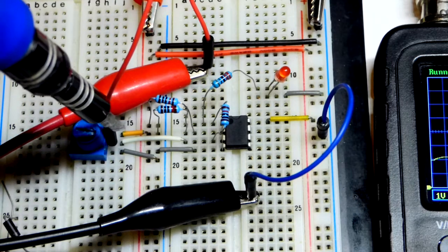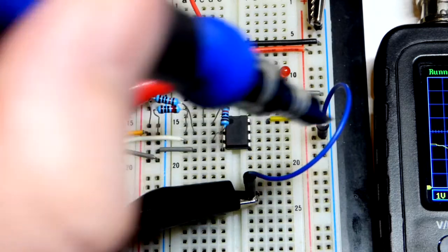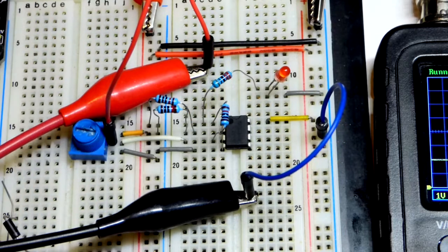So we've got the alligator clips clipped to these jumpers. That's where I'm taking my oscilloscope measurement. That's to the positive supply. And then we've got our ground right there to the negative supply, zero volts.